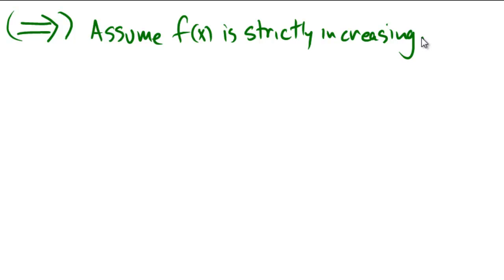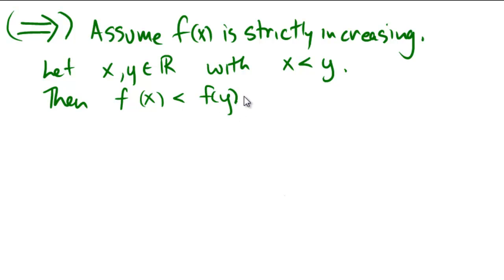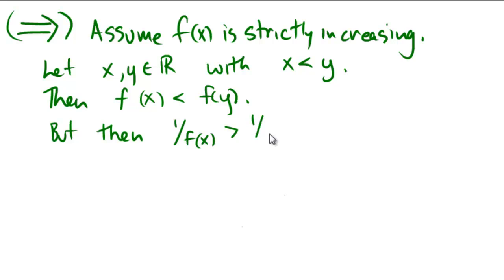Assume f of x is strictly increasing. If f of x is strictly increasing, let x and y come from the domain with x being less than y. Then, since f is strictly increasing, that means that f of x is going to be less than f of y, because that's the definition of being strictly increasing. But then, f of x and f of y are going to be positive numbers, so 1 over f of x is going to be bigger than 1 over f of y.